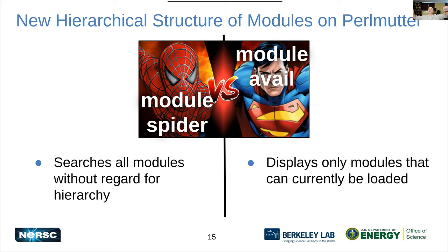Module spider versus module avail — both still exist on Perlmutter but function slightly differently. The module system on Perlmutter is called LMOD, whereas on Cori it was Tcl. LMOD has a hierarchical structure: if your module depends on another module being loaded first, module avail may not show it. Module spider searches regardless of that hierarchical structure and gives you more hits on any search.